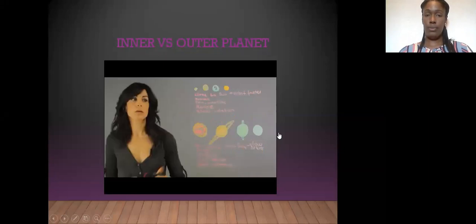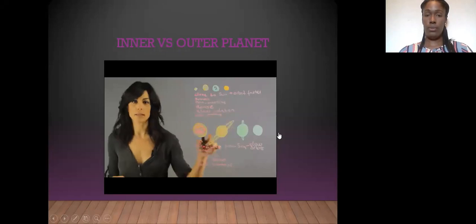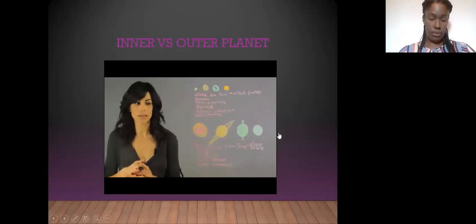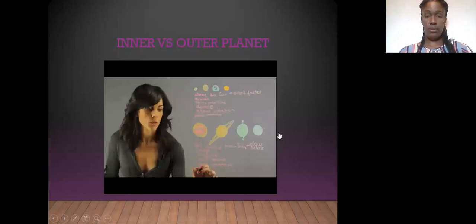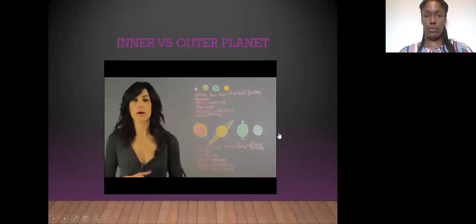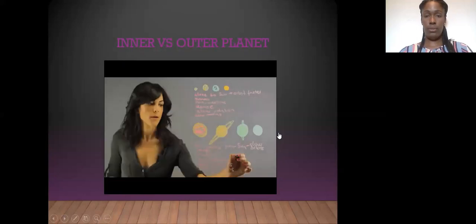Let's talk about moons. Generally, the inner planets have very few moons. Earth has one and so forth, so few moons. The outer planets have many moons. Like Saturn, I think the count is about 70 moons, so lots of moons. The last difference is that the inner planets don't have ring systems, but the outer planets do have rings.